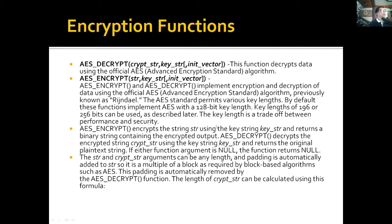AES_ENCRYPT encrypts a string using the key string and returns a binary string containing the encrypted output. AES_DECRYPT decrypts the encrypted string using the key string and returns the original plain text. If either function argument is null, the function returns null. The string arguments can be any length, and padding is automatically added as required by block-based algorithms such as AES. This padding is automatically removed by the AES_DECRYPT function.